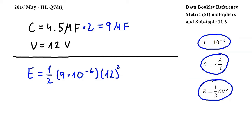Carrying out this calculation and rounding, we get approximately 6.5 times 10 to the power of negative 4 joules for the energy stored.